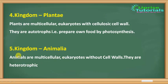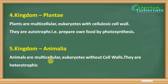Next is Kingdom Animalia. All animals are multicellular and eukaryotic — well-developed — but they do not have cell walls and are heterotrophic, meaning they are not able to make their own food. Kingdom Plantae and Animalia each contain their respective organisms. These are the five kingdom systems.